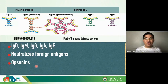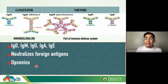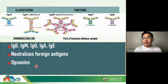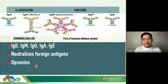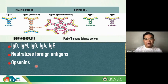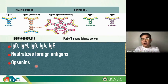Among all proteins, immunoglobulins are the only protein not synthesized by hepatocytes or by the liver. They are synthesized by plasma cells, which are a type of B cell in your blood. We have five classes of immunoglobulins: IgD, IgM, IgG, IgA, and IgE.